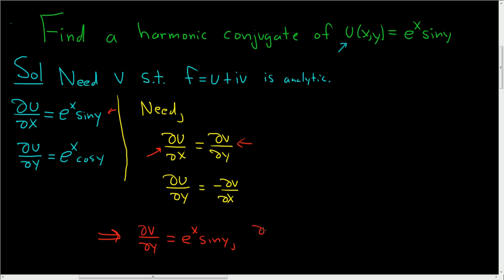We also want del v del x. Del v del x is going to be the opposite of del u del y. We multiply by negative 1, so that should equal negative e to the x cosine y.